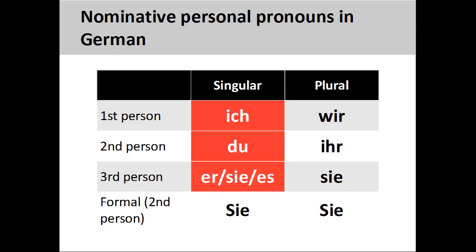Yet another actor appears on the stage. I don't talk directly to this actor, but I can talk about him or her with the second actor. The third person singular personal pronouns — er, sie, es — he, she, it — can be used to indicate the biological gender of the noun they replace.